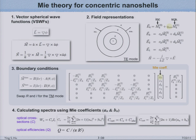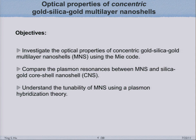That brings us to Mie theory for concentric spheres. Mie theory has been around for a long time and is used to solve light scattering from spherical objects. Mie theory is conventionally used for solid spheres or core-shell two-layer structures. Here I extended it so my code can compute light scattering from spherical objects with an arbitrary number of layers. By applying this Mie code, I directly looked at the optical properties of a gold-silica-gold multilayer nanoshell—the only difference from a conventional nanoshell being a gold core added to the center—and I also introduce a physics model to understand the tunability.